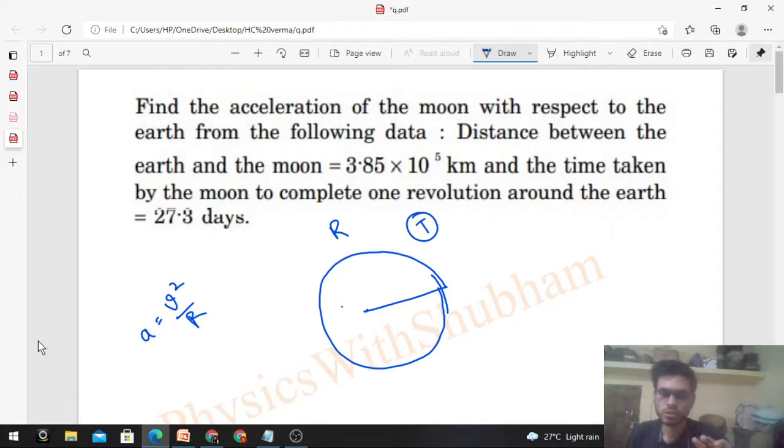We have to assume that the motion of the moon is uniform circular motion. We need acceleration, so we need to find V, the speed. Speed is distance upon time. In capital T time, one revolution is complete. So the distance traveled by the moon in one complete revolution is the circumference of the circle, which is 2πR divided by the time.